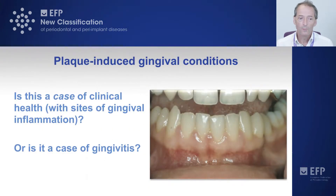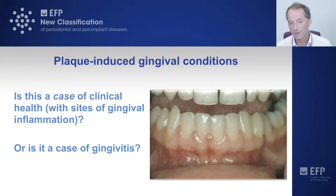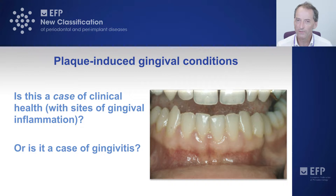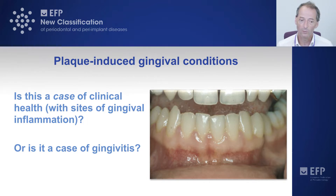Take this patient for example: they have no attachment loss, no bone loss, and the tissues are largely pink and healthy. However, in the lower incisor region there are three or four papillae that show signs of inflammation to an experienced periodontist or practitioner. So is this a case of clinical health with a few sites of inflammation, or is this a case of gingivitis? That was a real dilemma.